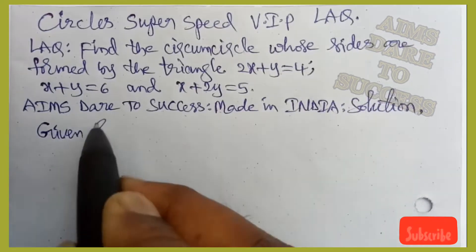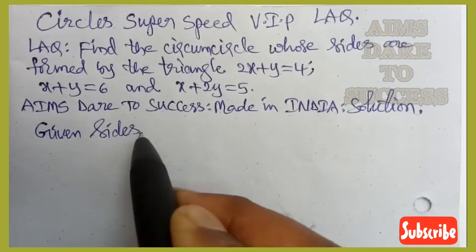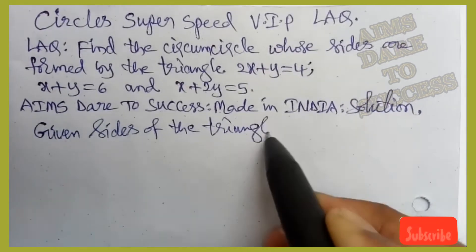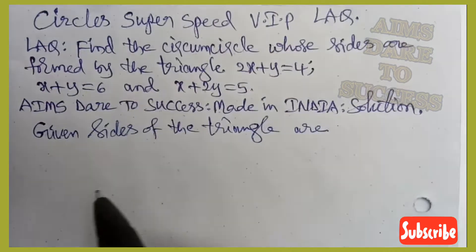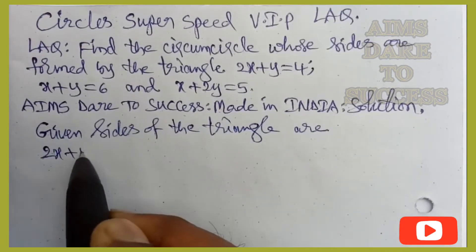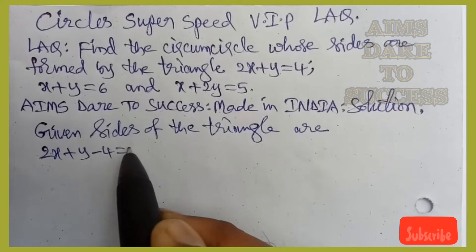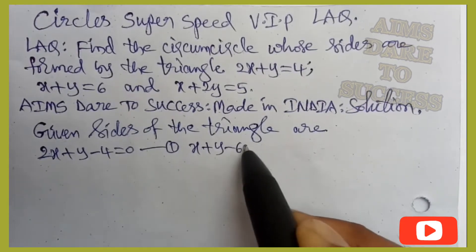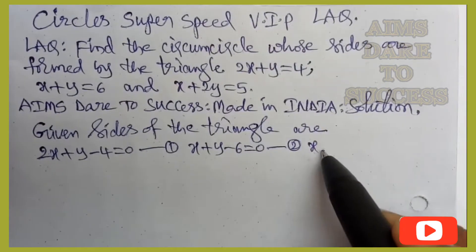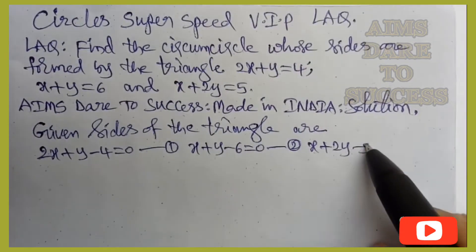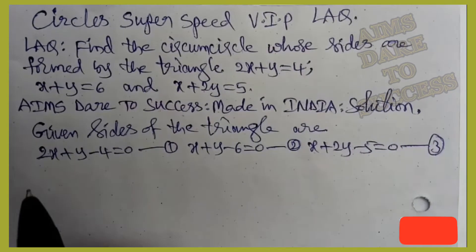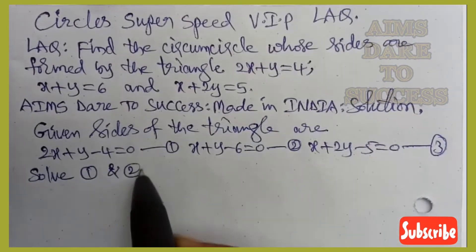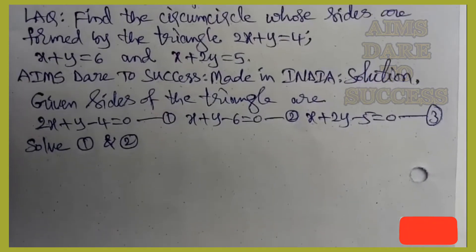Solution: the given sides of the triangle are — equation 1: 2x+y−4=0, equation 2: x+y−6=0, and equation 3: x+2y−5=0. Now solve equations 1 and 2 to get the first vertex.